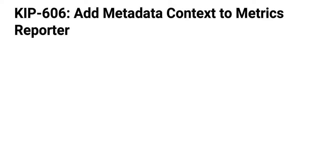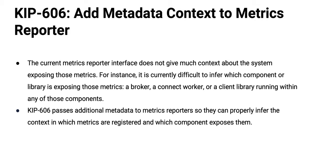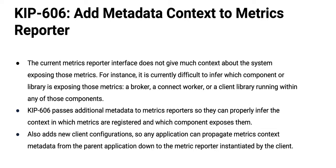KIP-606 adds metadata to metrics reporting. This is cross-cutting — it affects clients, the broker, Streams, Connect, really all parts of the system. The idea is that when metrics are being reported, you might not know where that event is coming from. It could be something from Connect, it could be something from a Streams application. Now with this KIP, that context is reported, so you don't have to go fishing or inject your own context to back that out. This KIP makes that official.